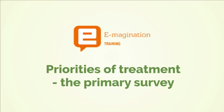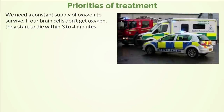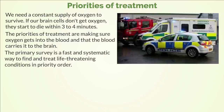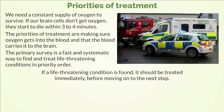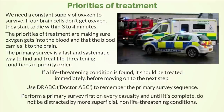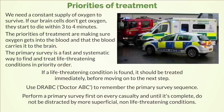Priorities of treatment — the primary survey. We need a constant supply of oxygen to survive. If our brain cells don't get oxygen, they start to die within three to four minutes. The priorities of treatment are making sure oxygen gets into the blood and that the blood carries it to the brain. The primary survey is a fast and systematic way to find and treat life-threatening conditions in priority order. Use DRABC to remember the primary survey sequence. Perform a primary survey first on every casualty and, until it's complete, do not be distracted by more superficial, non-life-threatening conditions.